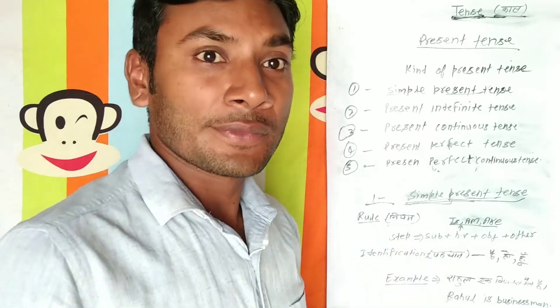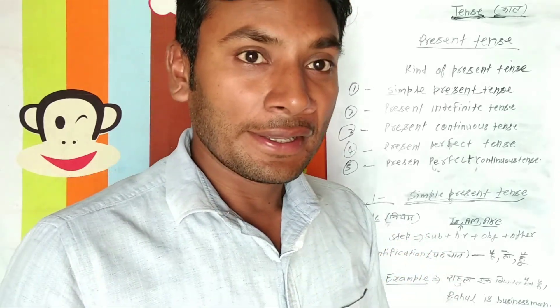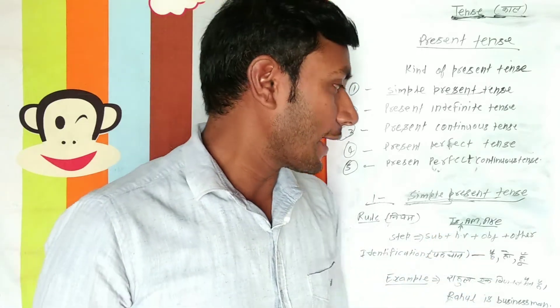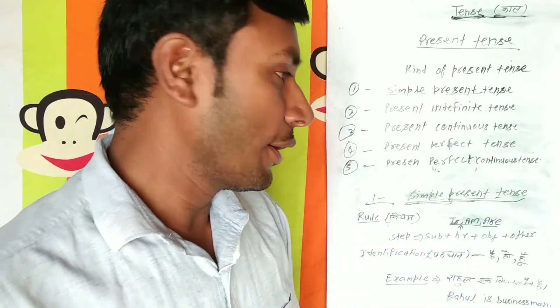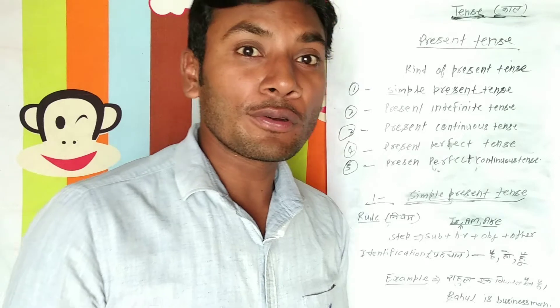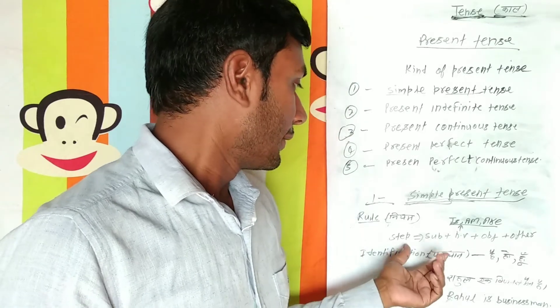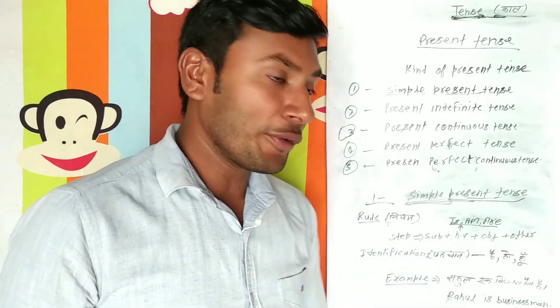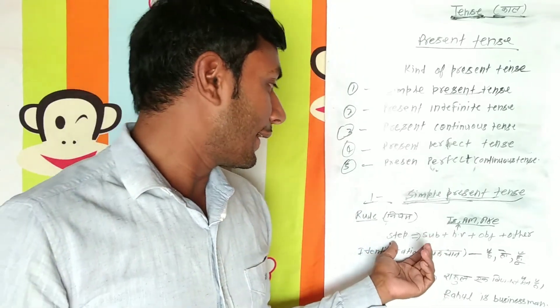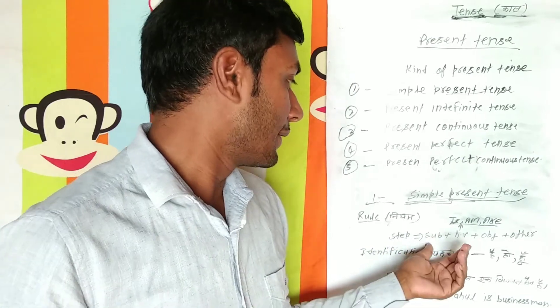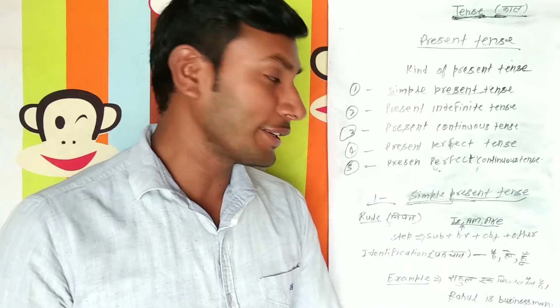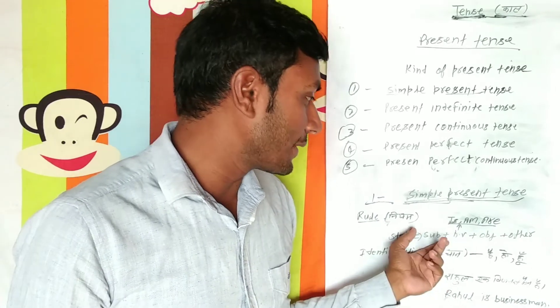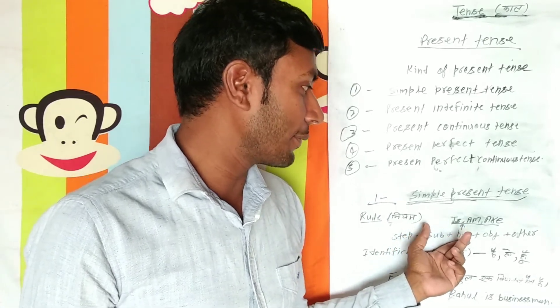In its rule, the helping verb — am, is, or are — we have known already. Now we take care of its steps. First, we write subject plus helping verb plus object and other words.